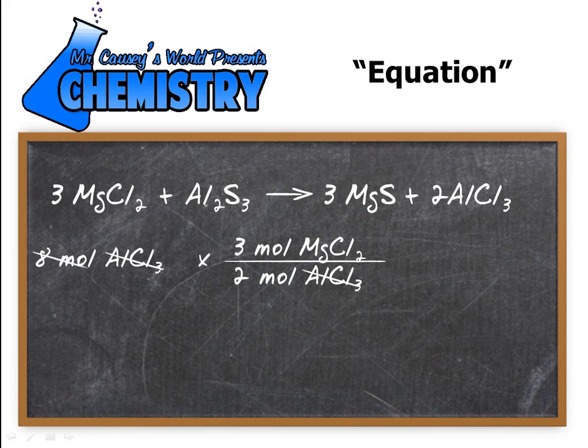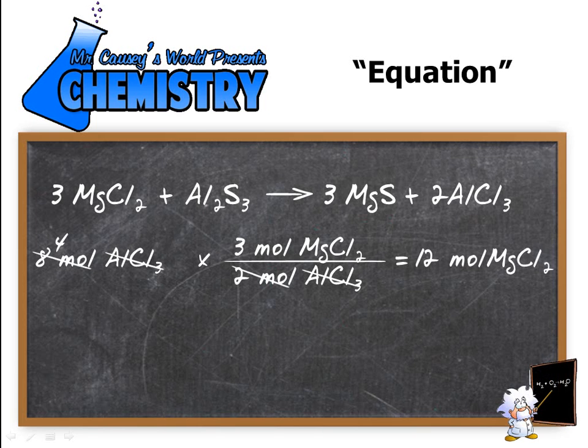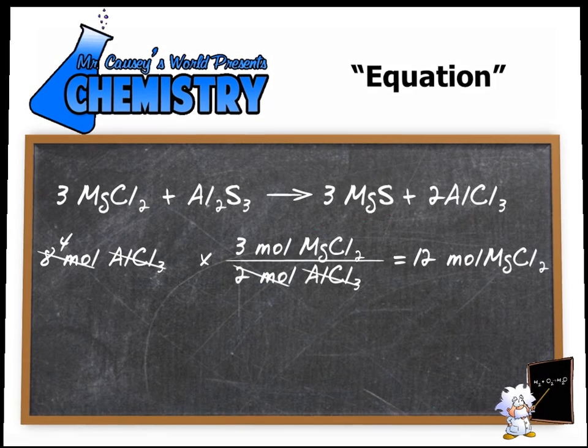Now let's go through and cancel out two and eight because that will give us four. That's just a little bit of reducing and then four times three is twelve moles of magnesium chloride and we've got it. Eight moles of aluminum chloride will come from twelve moles of magnesium chloride. Alright let's look at part two.